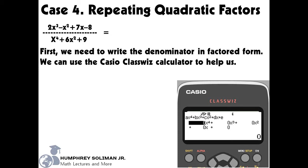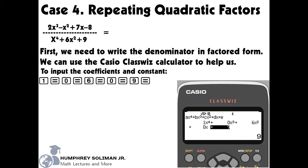We are now ready to input the coefficients and constant term of our denominator. We will follow the string of keys. After that, we will press the equals key to see our first value of x: x equals the square root of 3 times i. This gives us the first factor which is x minus the square root of 3 times i.